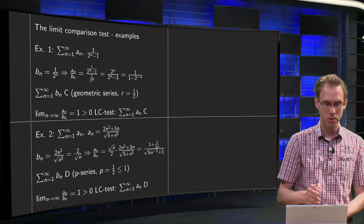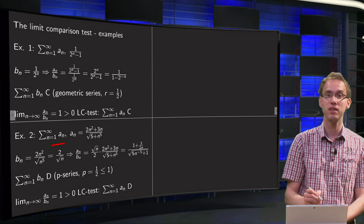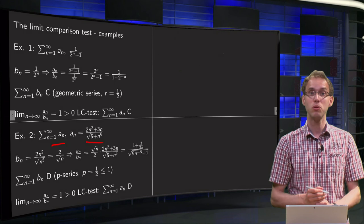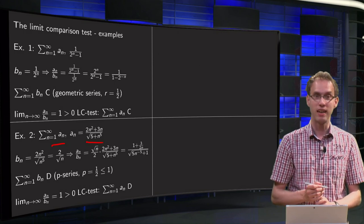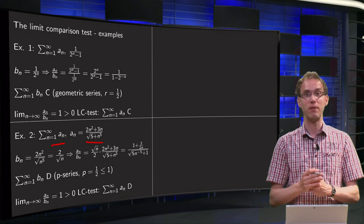Then let's look into a series which looks really awkward, sum n from 1 to infinity of the an, where the an are this expression: 2 times n squared plus 3 times n divided by the square root of 5 plus n to the power 5. So what can we do?